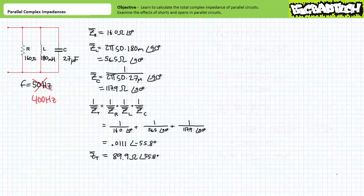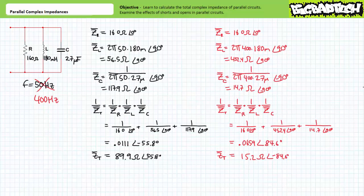Let's prove this hypothesis with some calculations. At 400 hertz, the 160 ohm resistor would still present a complex impedance of 160 ohms at an angle of zero degrees. Substituting our given values into the inductive and capacitive complex impedance formulas, we arrive at the following results: the inductor has a complex impedance of roughly 452.4 ohms at an angle of positive 90 degrees — as we expected, its magnitude increased. The capacitor has a complex impedance of roughly 14.7 ohms at an angle of negative 90 degrees — as we expected, its magnitude decreased. When we add 1/ZR plus 1/ZL plus 1/ZC and take the inverse, we arrive at ZT being equal to 15.2 ohms at an angle of negative 84.6 degrees. ZT does indeed appear to be primarily capacitive given it's deep in the fourth quadrant, as the capacitor is now the element with the smallest magnitude and the path through which the largest amount of current will flow.